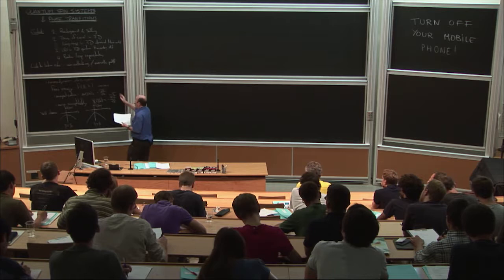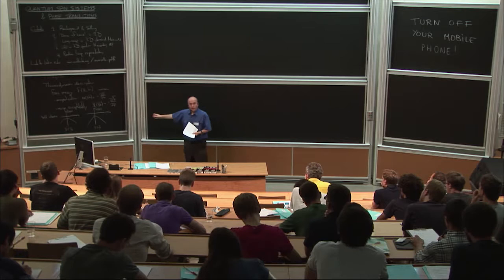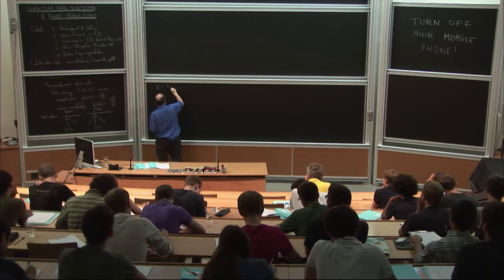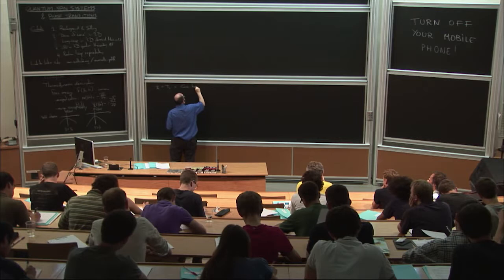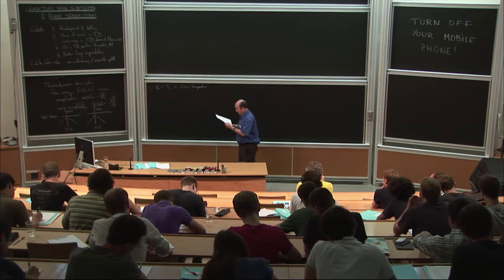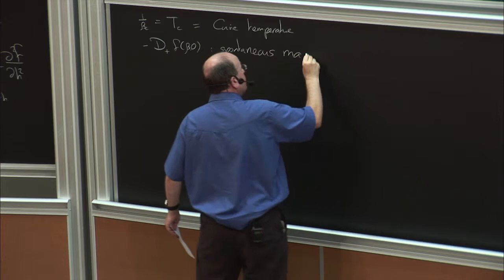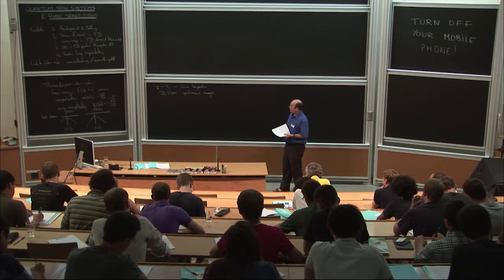It's good to know what these things are called. β_c is the critical temperature, also called the Curie temperature, in honor of Marie Curie. The spontaneous magnetization is minus the right derivative of F at zero. This is what can be observed and measured for certain materials.